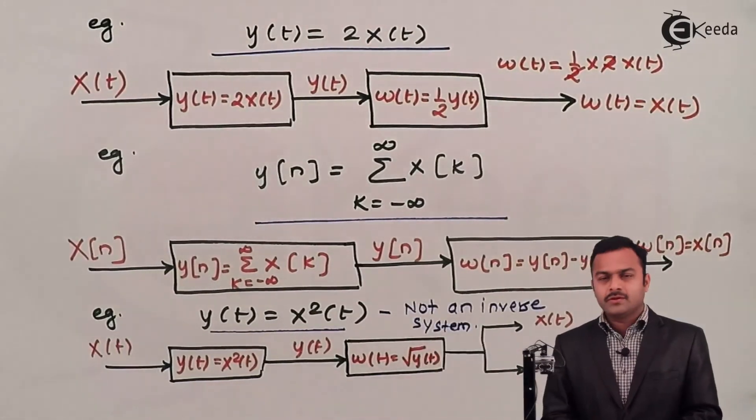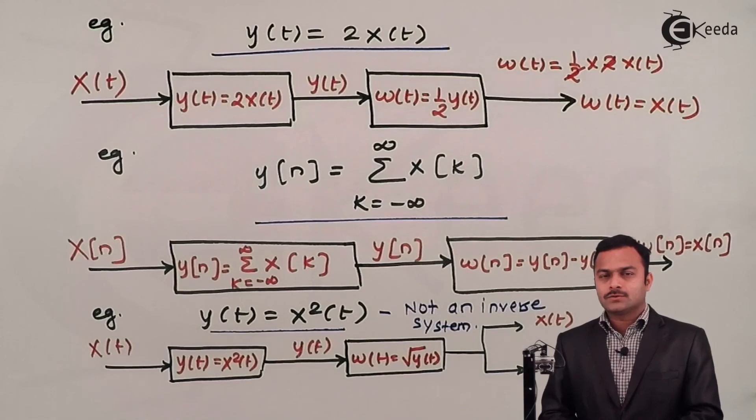The definition of inverse system is that for a distinct input I should get a distinct output. This is about invertibility and inverse system. Thank you.